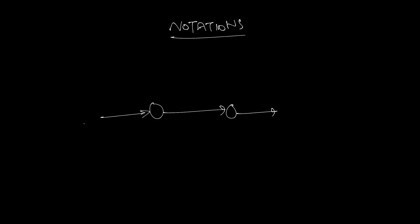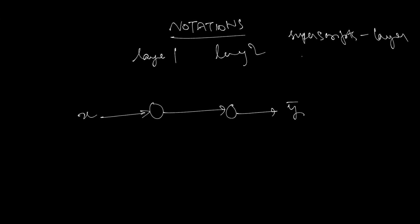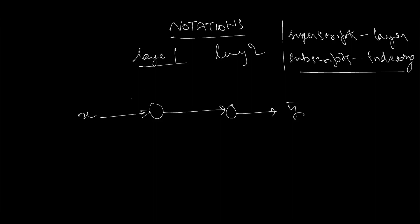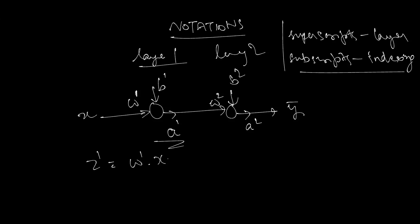Now let's look at the notations we'll be using throughout the series. We have a simple neural network with two layers — layer one and layer two — with input x and output y-bar. We'll use superscripts for the layer number and subscripts for indexing. The weights associated with layer one are w with superscript 1, similarly for the bias and output a1. To calculate a1, we write z1 (superscript 1) = w1 * x + b1, and a1 = σ(z1), where σ is any activation function.